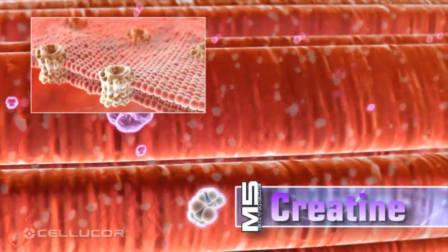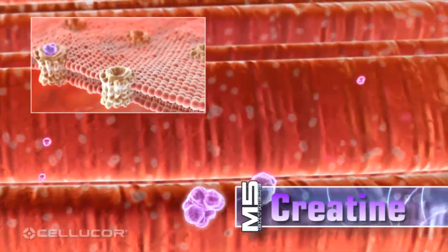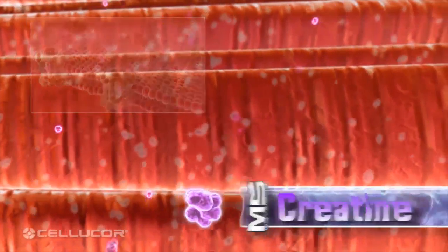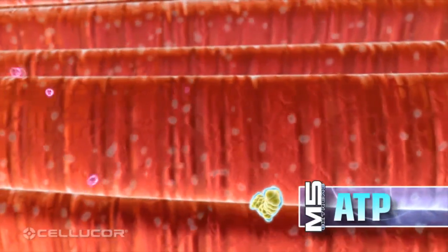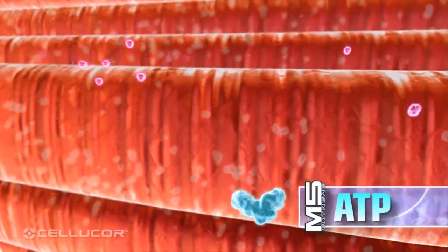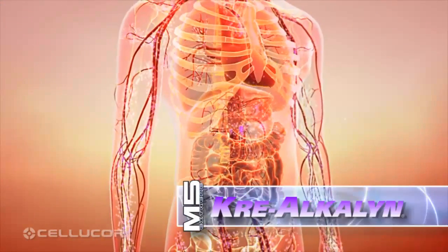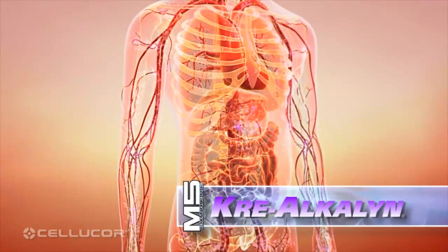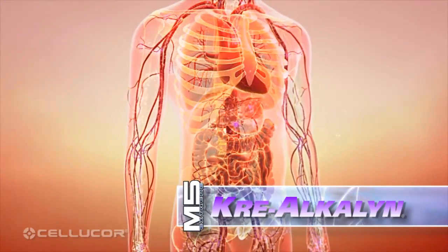Creatine is a major source of muscle energy. Inside muscle cells, creatine increases the levels of ATP, the universal energy molecule that all cells in the body use. M5 Extreme contains Crealkalin, an advanced form of creatine that resists breakdown in the stomach's acidic pH.